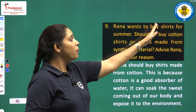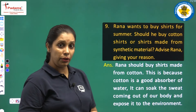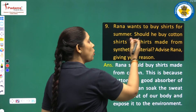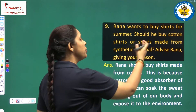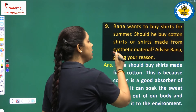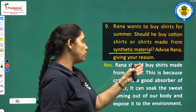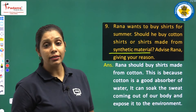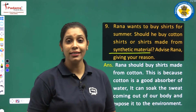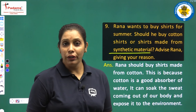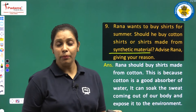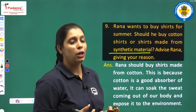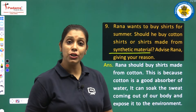Rana wants to buy shirts for summer. Should he buy a cotton shirt or shirts made of synthetic material? Advise Rana and give your reason. It is very easy to suggest to Rana — we suggest he buy a cotton shirt for summer. Why a cotton shirt? Because cotton is a good absorber.